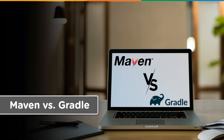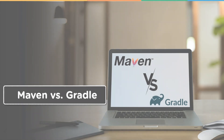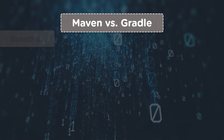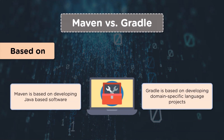Let's have a look at the contrast between these two tools based on 6 prominent features. The first point of comparison is what Maven or Gradle is based on. Maven is based on developing Java based software and the goal is related to a project phase. Whereas Gradle is based on developing domain specific language projects, and the goal with Gradle is to add functionality to a project.